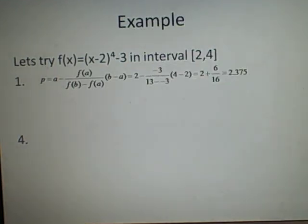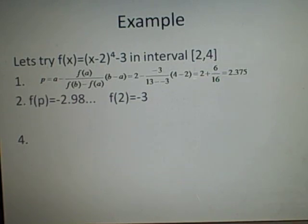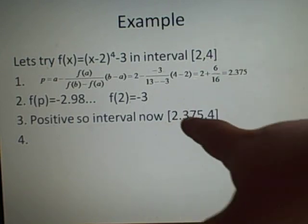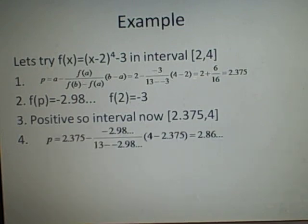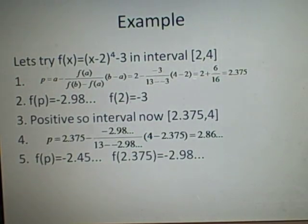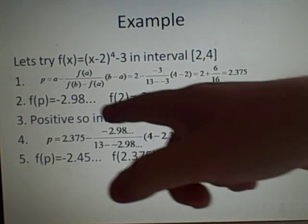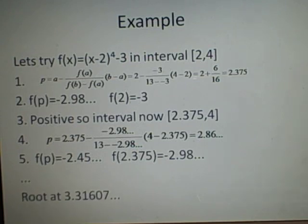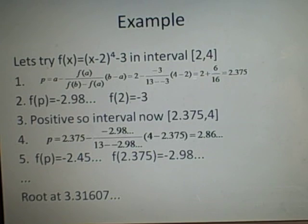We compute: minus 3 divided by (13 minus minus 3), multiplied by (b minus a), which is 4 minus 2. That gives 2 plus 3 over 16 times 2, so 6 over 16, which is 2.375. Putting that into our function gives about minus 2.9, approximately minus 3. f(a) is also minus 3, so multiplying gives a positive — the root is in the second half between 2.375 and 4. Continuing this, our next p is about 2.86, and we're slowly closing in on 3.3167.